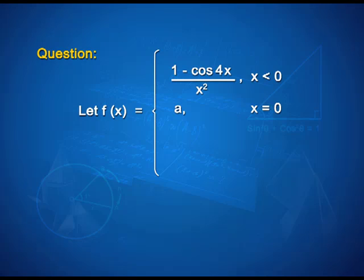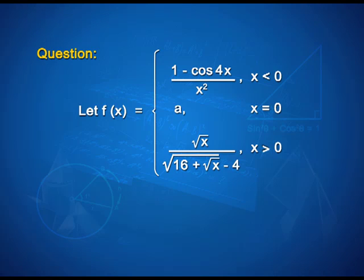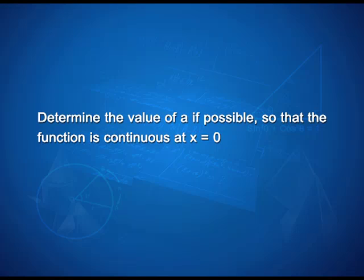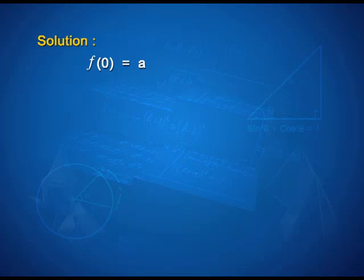For x less than 0, it is a trigonometric function. Greater than 0, you have irrational factors and what do we do when you see an expression like that in terms of evaluation of limits? We use rationalization. So, we are going to bring up both the methods as we go further with the solution. Very first thing f(0) is a. That is very clear. Define. Let us put that at rest.